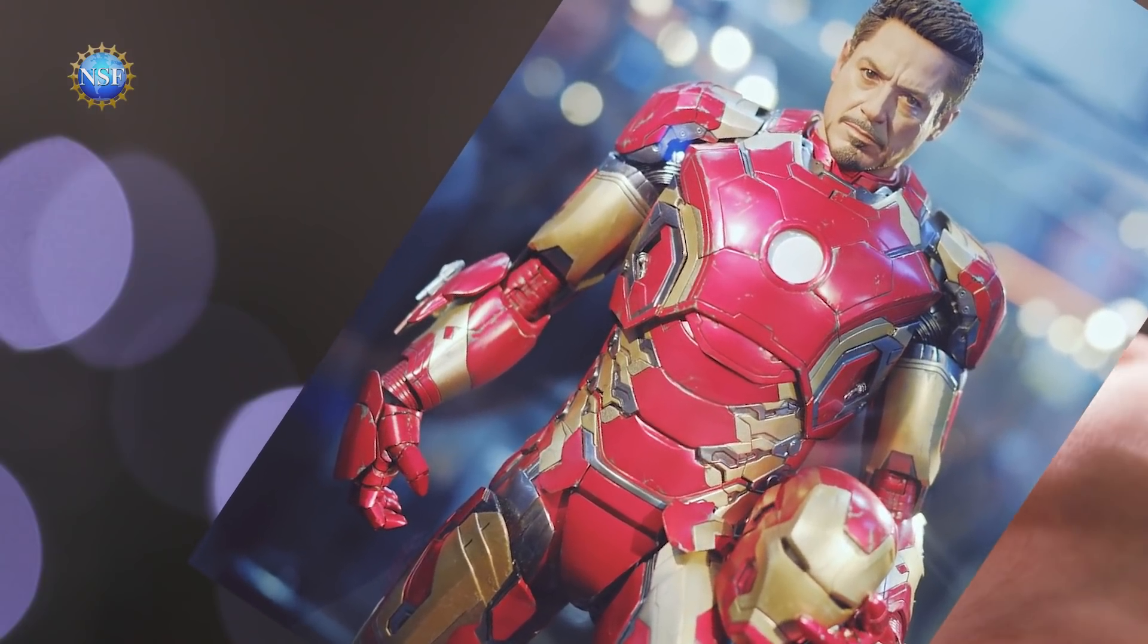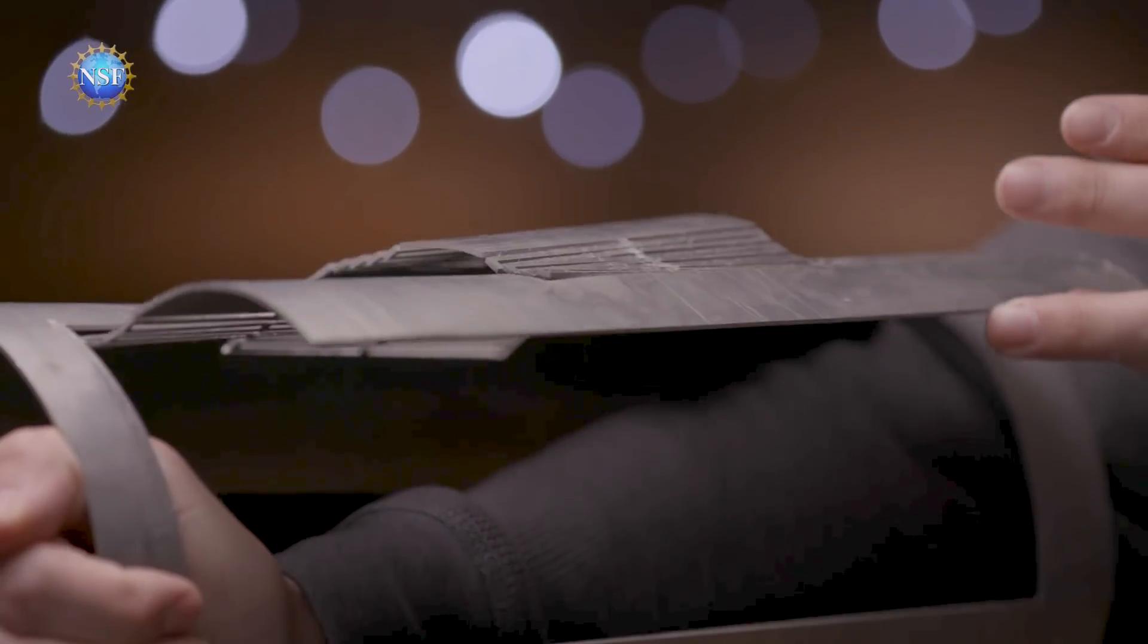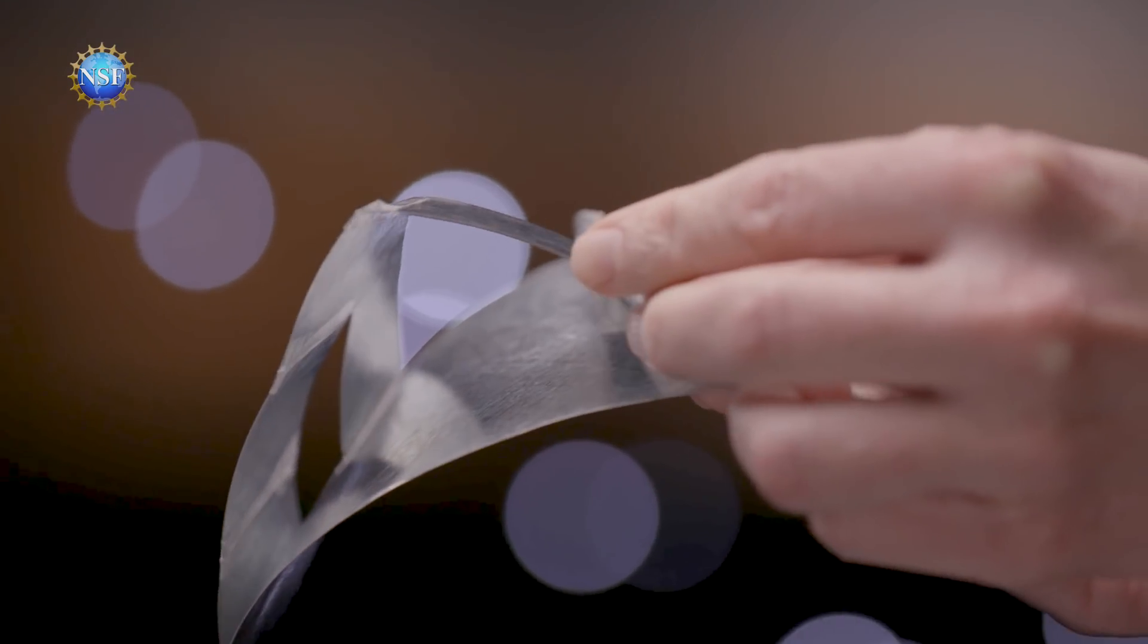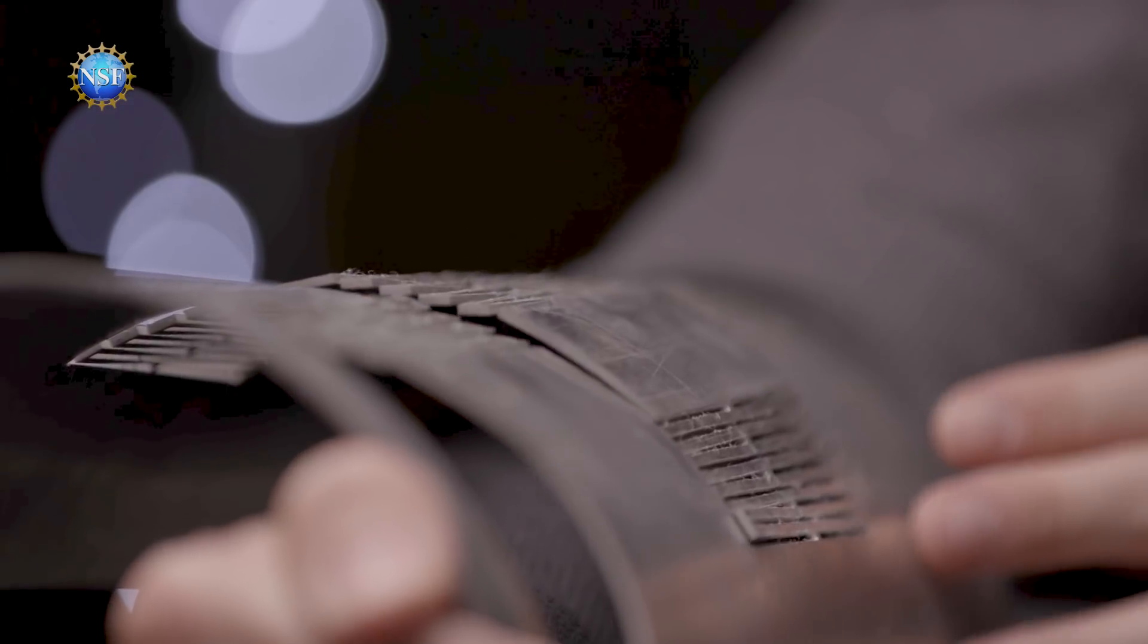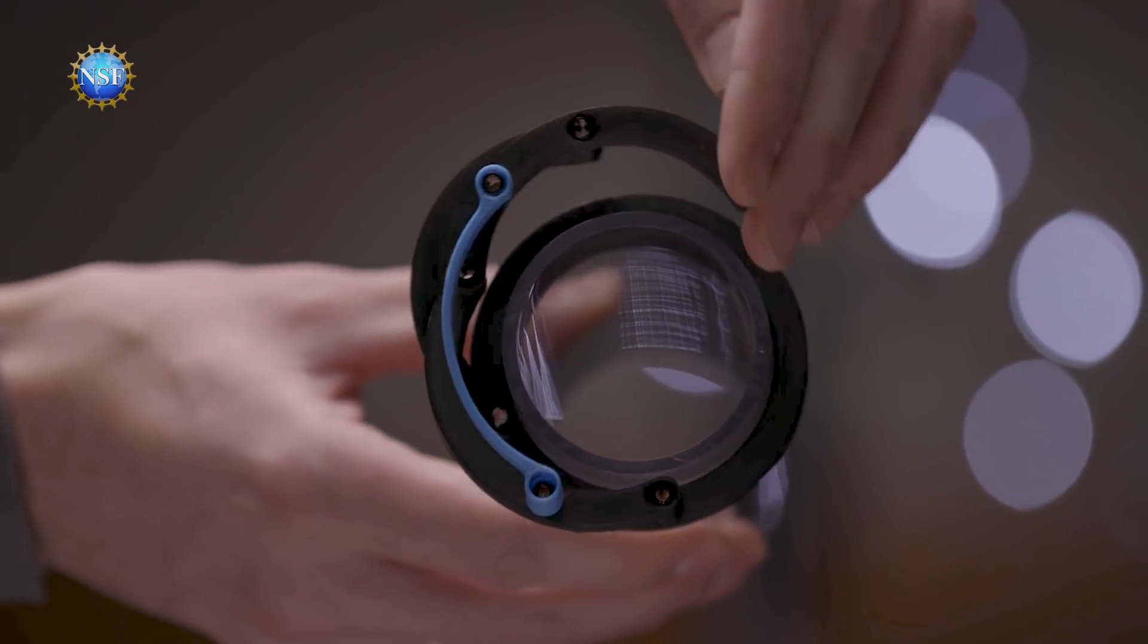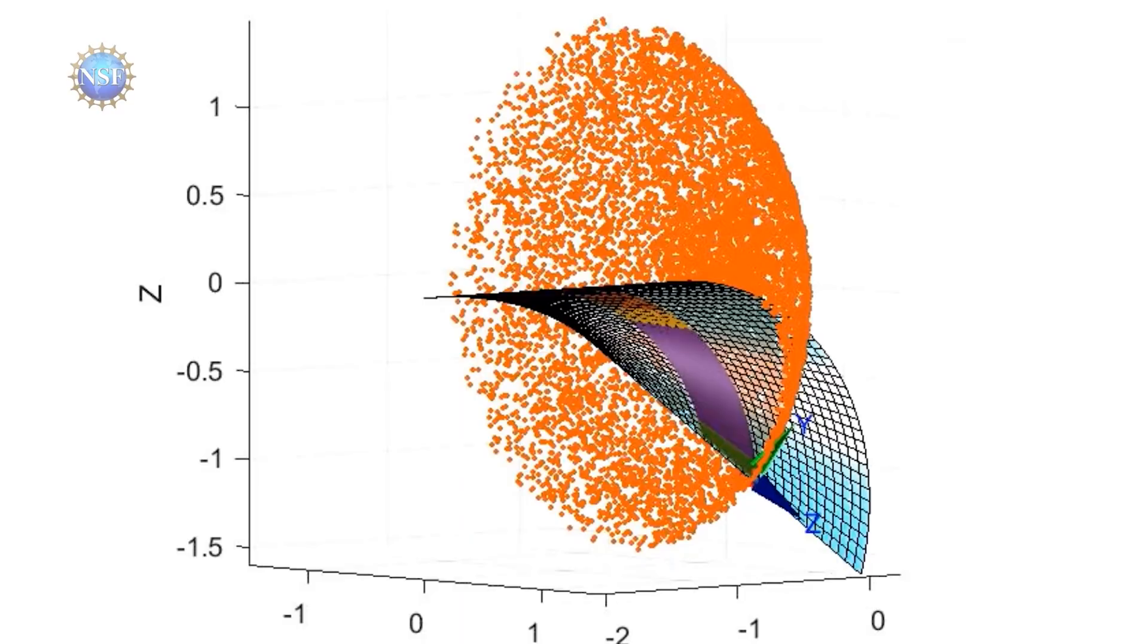Like the arms of the Iron Man suit, they transform when deployed to serve unique functions, then simply fold back into the structure. The research team is circling lots of potential applications for curved origami design.